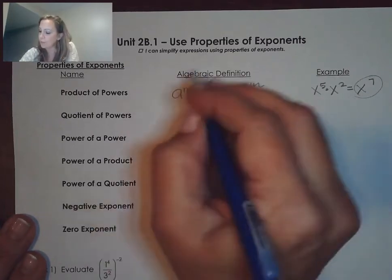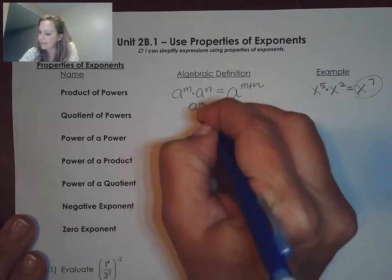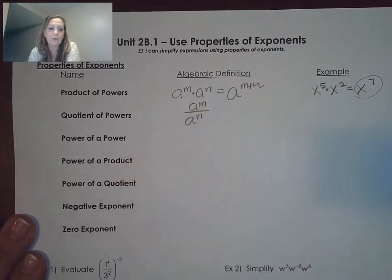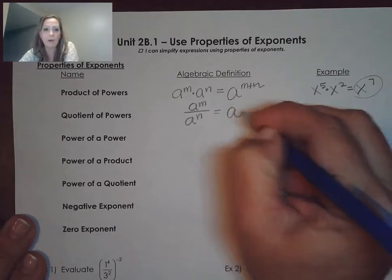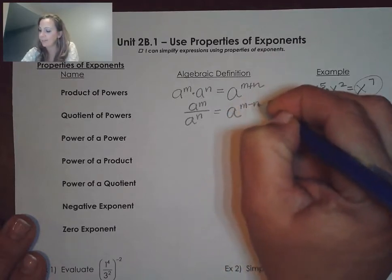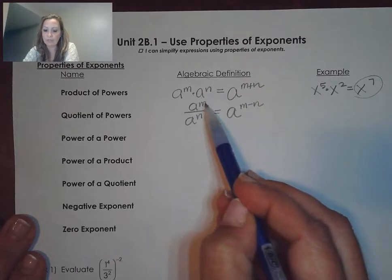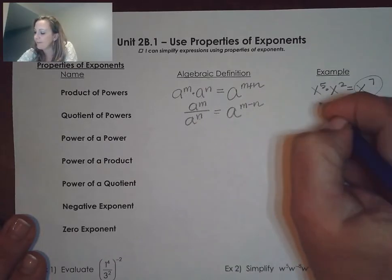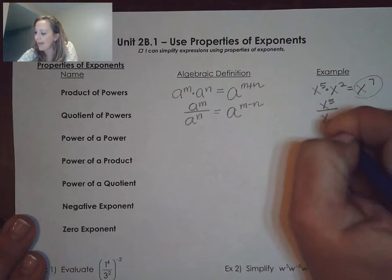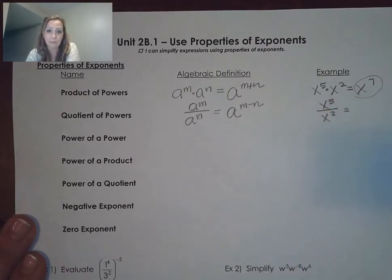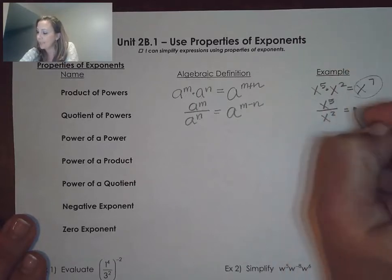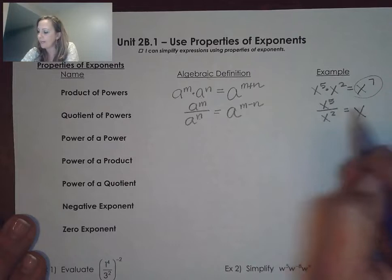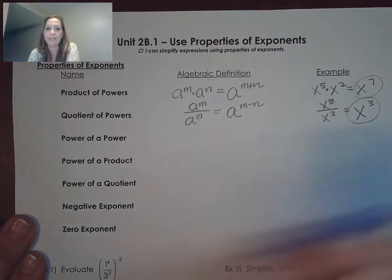The quotient of powers — quotient is division. That's when we have A to the m over A to the nth. When we are dividing powers that have the same base, we keep our base but then we subtract the exponents, numerator minus denominator. A specific example would be x to the fifth divided by x squared. We keep our base of x, subtract the exponents, 5 minus 2, we get x cubed.